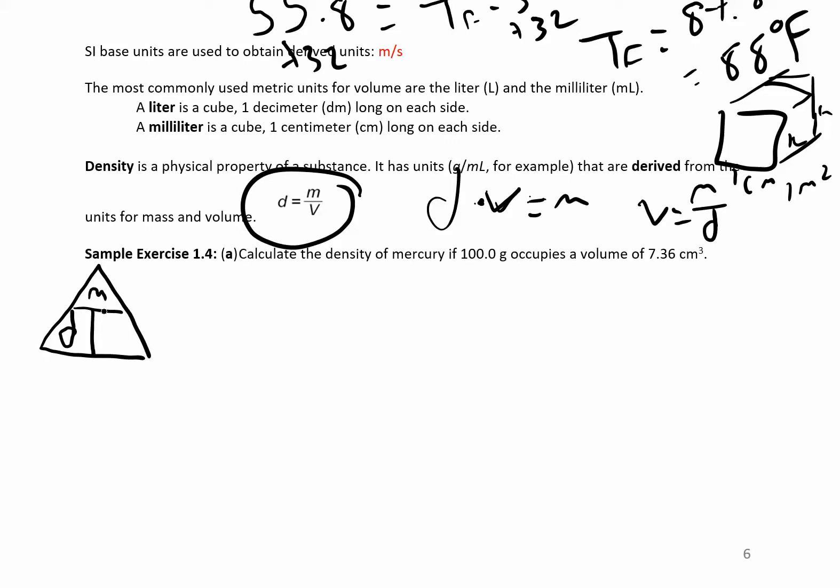But if you have density is mass over volume, you can set up this little triangle. And when you're trying to solve for density, cover this up. So when you cover that up, then you get mass over volume. If you're trying to solve for volume, cover this up. And you get mass over density. If you're trying to solve for mass, cover this one up. You have density times volume. So that's a little trick for rearranging this equation if you don't understand algebra.